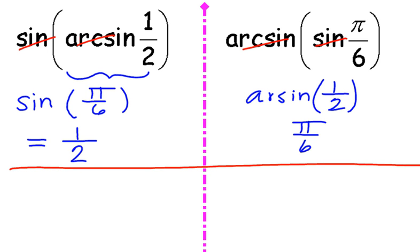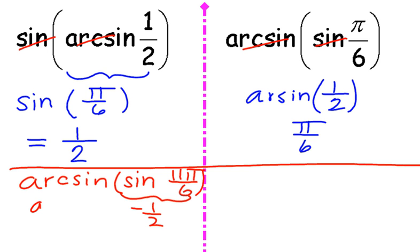What if I asked you for the arcsin of the sine of 11π/6? Well, the sine of 11π/6 is negative 1/2. But the arcsin of negative 1/2 is negative π/6 based on the range restrictions that we have. So please do not follow the pattern of just crossing out the functions because they're inverses of each other. At some point, that's going to get you into some trouble.